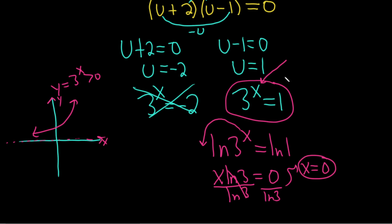Another way is to simply recognize that x has to be 0 because 3^0 = 1. This is the solution.